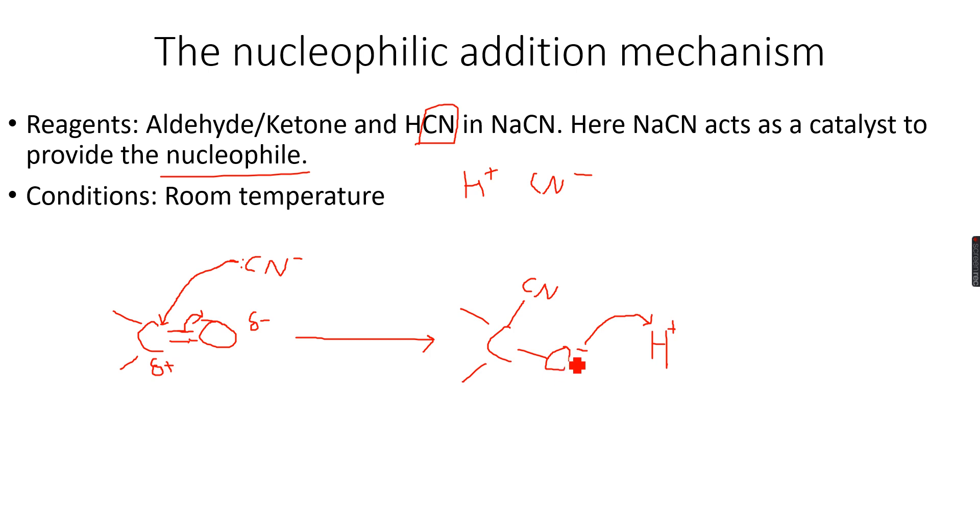Remember that the curly arrows show the movement of electron pairs. You cannot show H+ ion attacking the O-, but rather you have to show the O- ion attacking the H+ ion. So what you get is this.